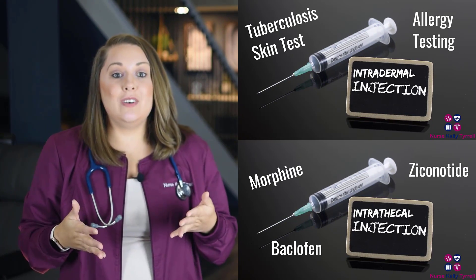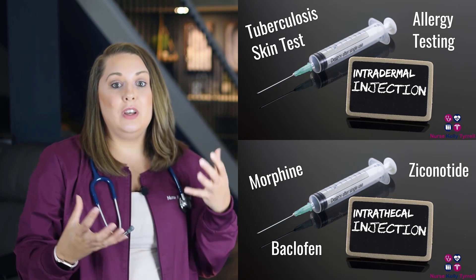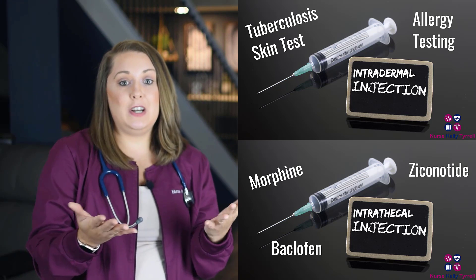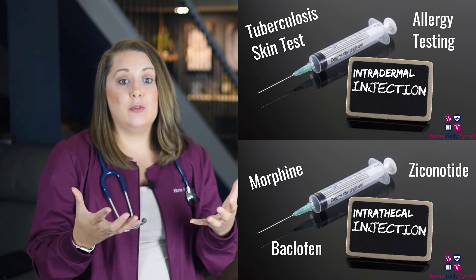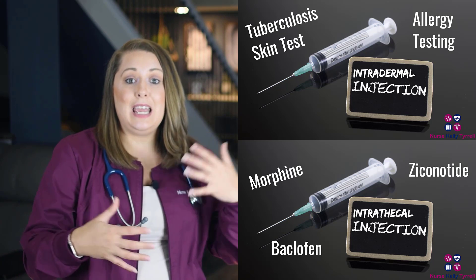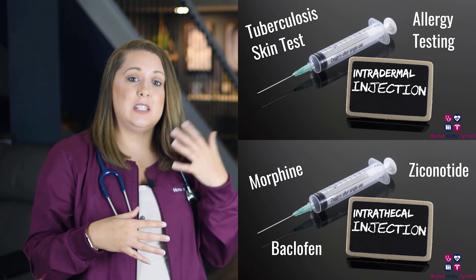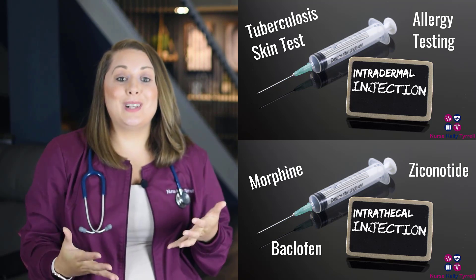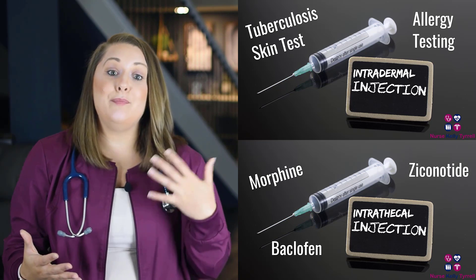The intradermal and intrathecal routes are the least commonly used injection routes. The most common intradermal injections are TB skin tests and allergy testing. Intrathecal medications are typically used for control of pain in cancer and non-cancer conditions, severe chronic pain, and managing severe spasticity in adults and children. The most common medications given this route are morphine, ziconotide, and baclofen.